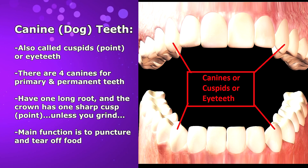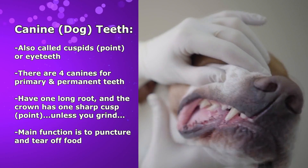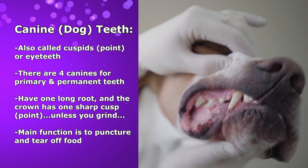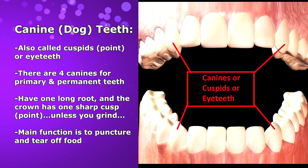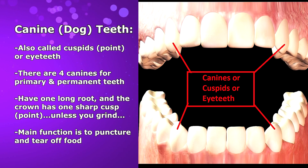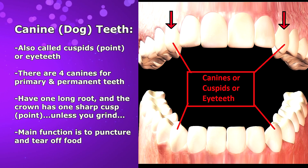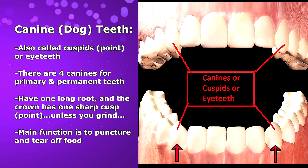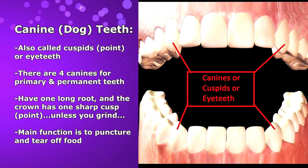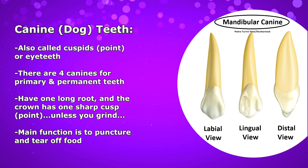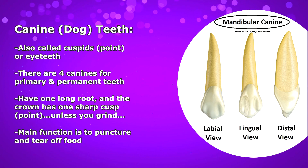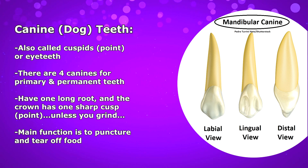And if you consider the name of these teeth, you'll always remember which ones they are because cuspid means point and canine refers to dogs, which have those sharp pointy teeth. Now you'll find four canines in both the baby teeth and the permanent teeth. Two are going to be in the maxillary arch and two in the mandibular arch, which sit alongside the lateral incisors distally. Canines have one long root, and the crown has one sharp point called a cusp, hence the cuspid name.